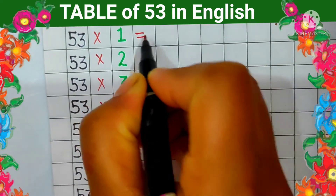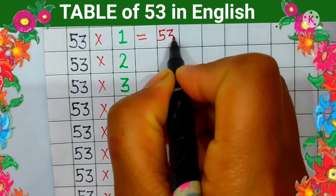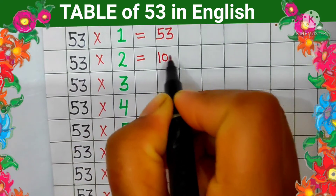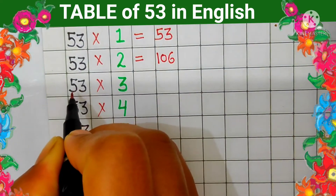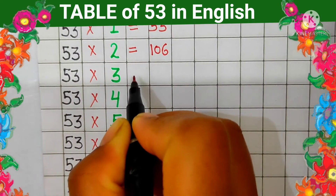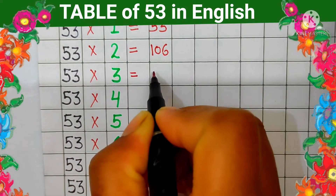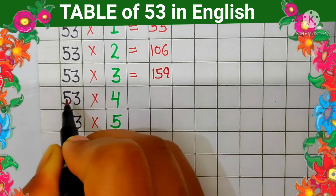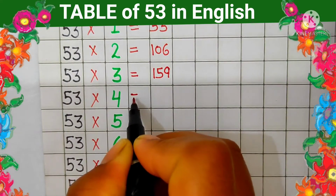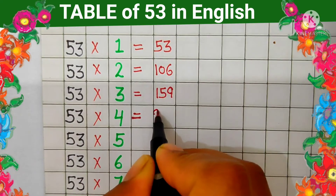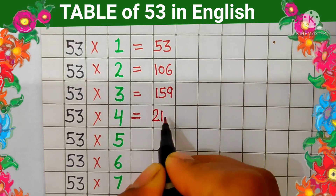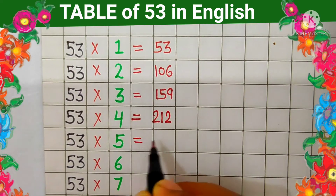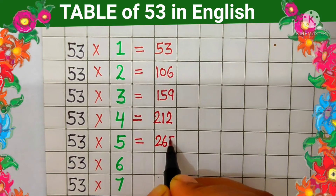53 ones are 53, 53 twos are 106, 53 threes are 159, 53 fours are 212, 53 fives are 265.